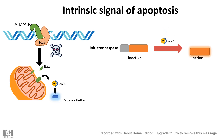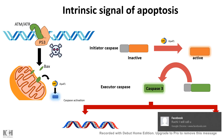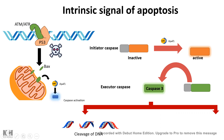Together with APAF1, cytochrome c can activate initiator caspases like caspase 8 or caspase 9. Normally these caspases are also in an inactive form and are triggered and activated by proteolytic cleavage. Once the initiator caspases are active, they also activate the subsequent executor caspase — most commonly caspase 3. Once the executor caspase is activated, it ensures the cell will die by cleaving DNA or by cleaving the cytoskeletal elements, leading to overall cytoskeleton breakdown.